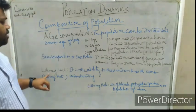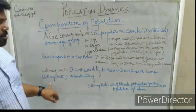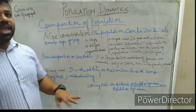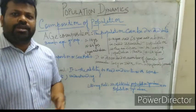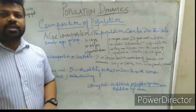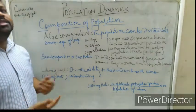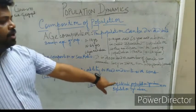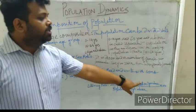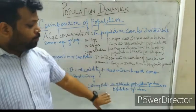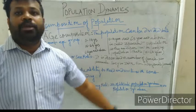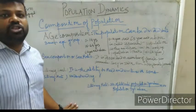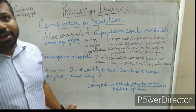Next comes literacy level, or literacy rate. It is the ability to read and write with some understanding. Not everybody in a country is able to read and write. To determine the literacy rate, we use the formula: number of literate people in the population aged 7 years and above, divided by the total population aged 7 years and above, multiplied by 100. With this formula, we can calculate what percentage of people in India are literate.